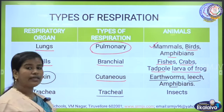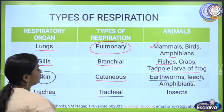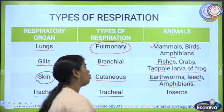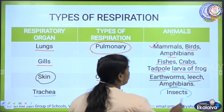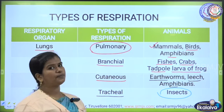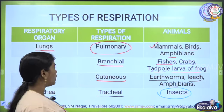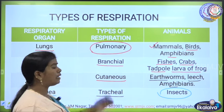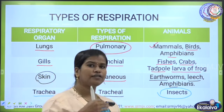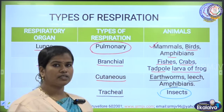The next type is tracheal respiration. The animal which uses trachea undergoes tracheal respiration. Most insects undergo tracheal respiration. The words bronchial, trachea, and pulmonary may be new to you — in forthcoming videos we will be talking in very detail about these things.